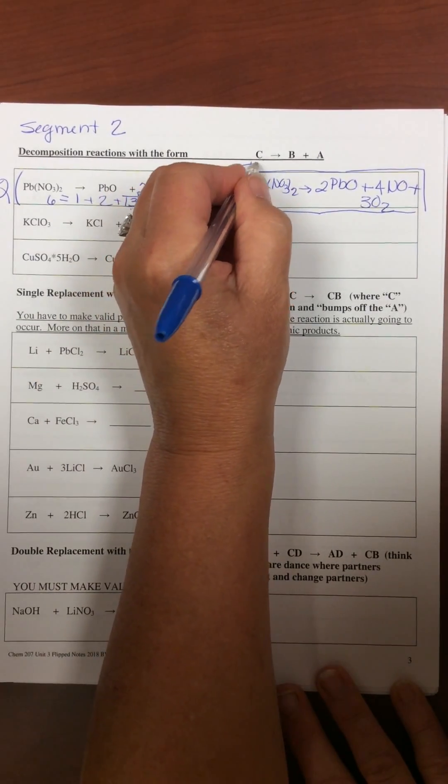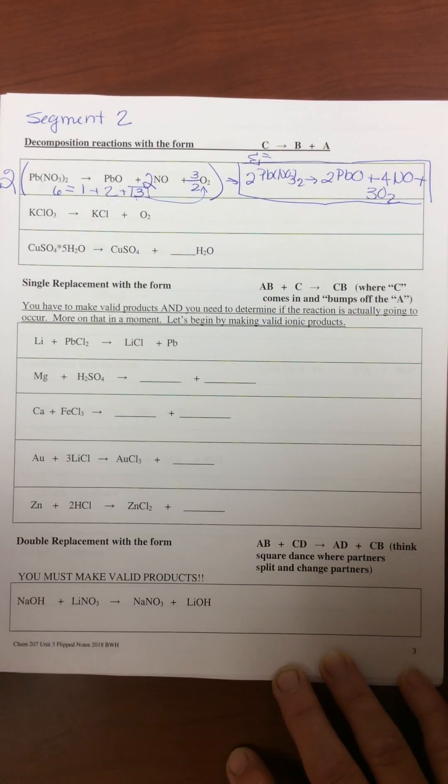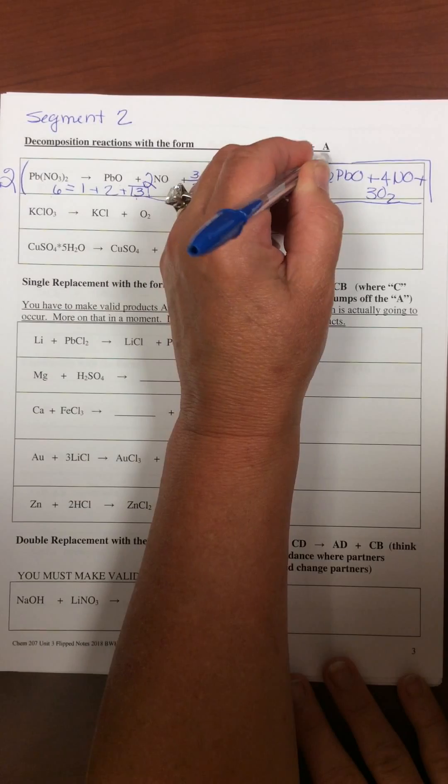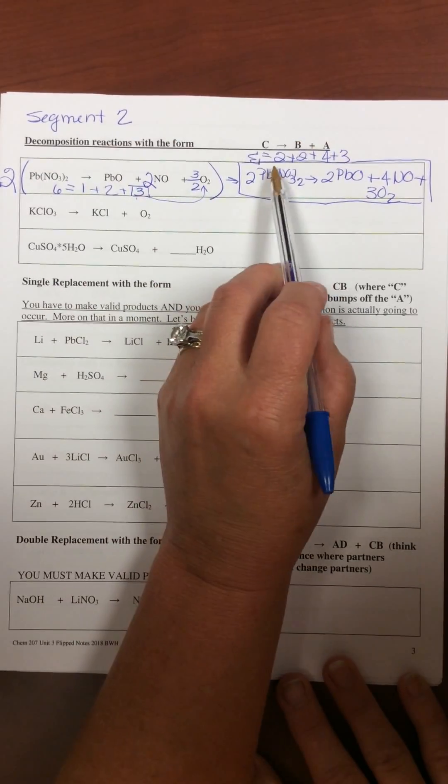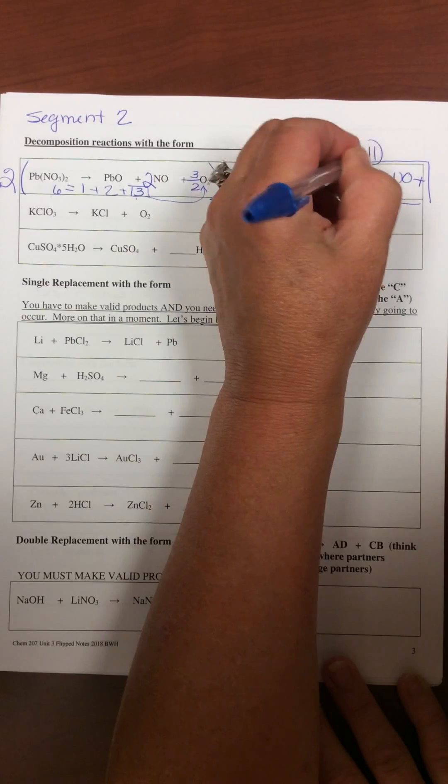Sum of the stoichiometric coefficients, so that there are no fractions, would be two plus two plus four plus three is four plus seven, eleven.